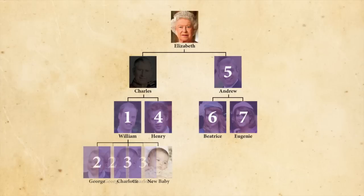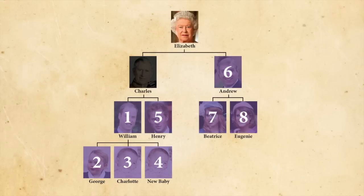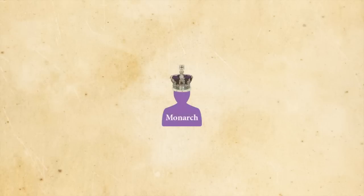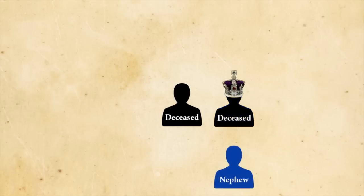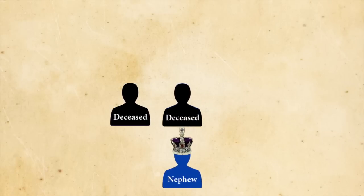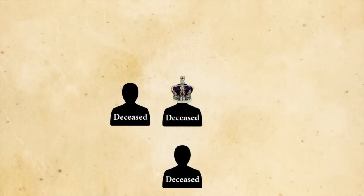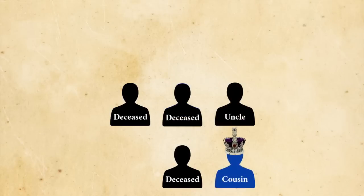Whenever a new member of the royal family is born, everyone behind the new baby in line will move down one place. Whenever a member of the line passes away, those behind them will move up one place. Those in line ahead of the person in question are never affected. If a monarch should die with no living descendants, then the crown would pass to the next eldest brother of the dead monarch, and then to his son. If the monarch has no living brothers, sisters, nephews, or nieces, then the crown would move up a generation until the nearest living legitimate relative can be found.